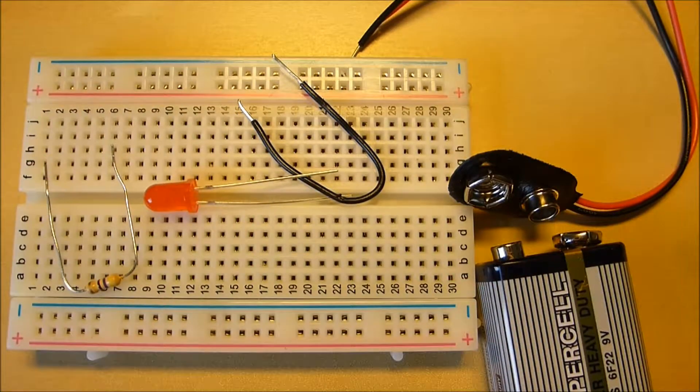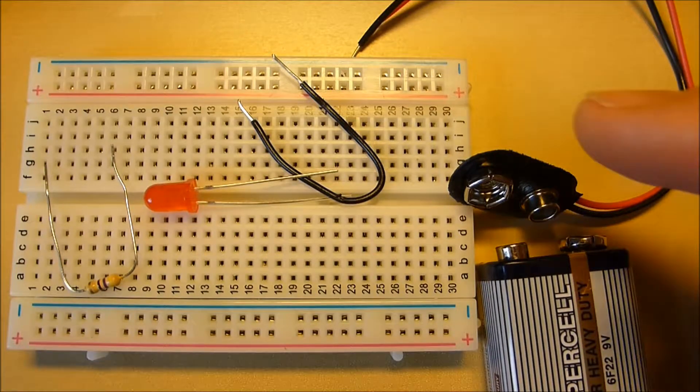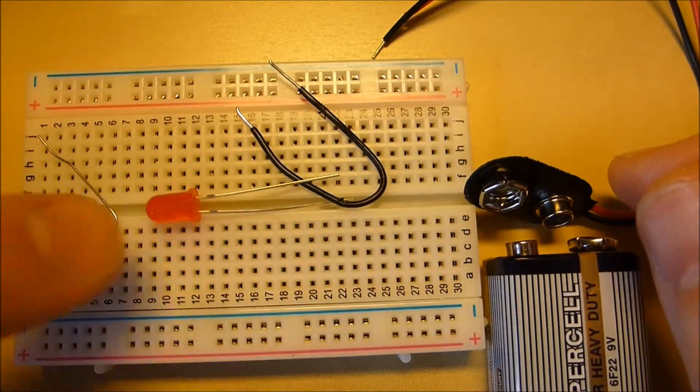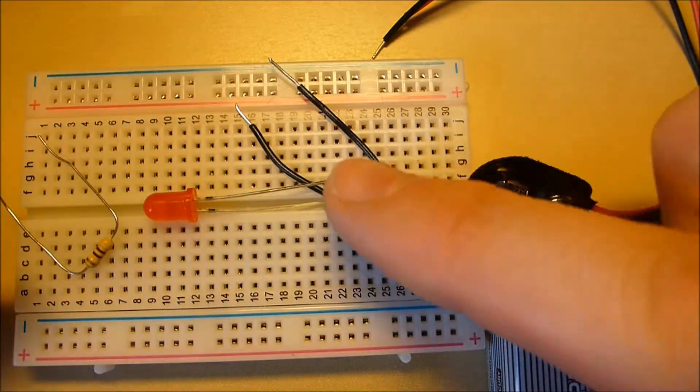So what we have here is we have a few components, we've got a battery, this is a 9V battery, battery connector, a resistor, a LED or light emitting diode and a piece of wire.